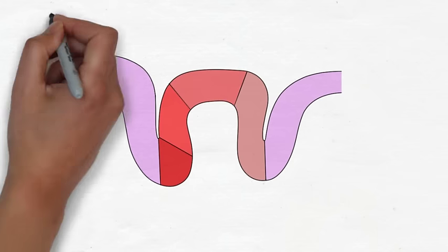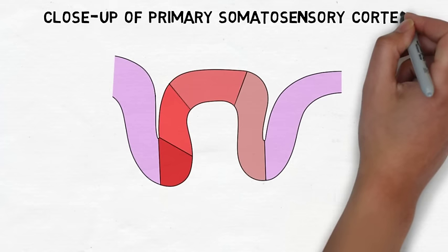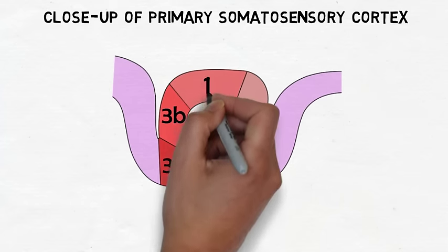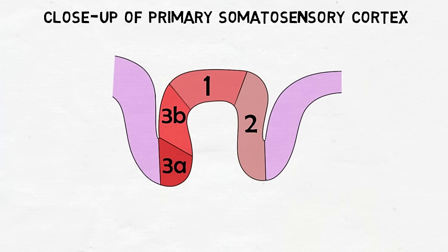The primary somatosensory cortex is typically divided into four areas: area 3A, 3B, 1, and 2. Area 3 receives the majority of somatosensory input directly from the thalamus, and the initial processing of information occurs here.